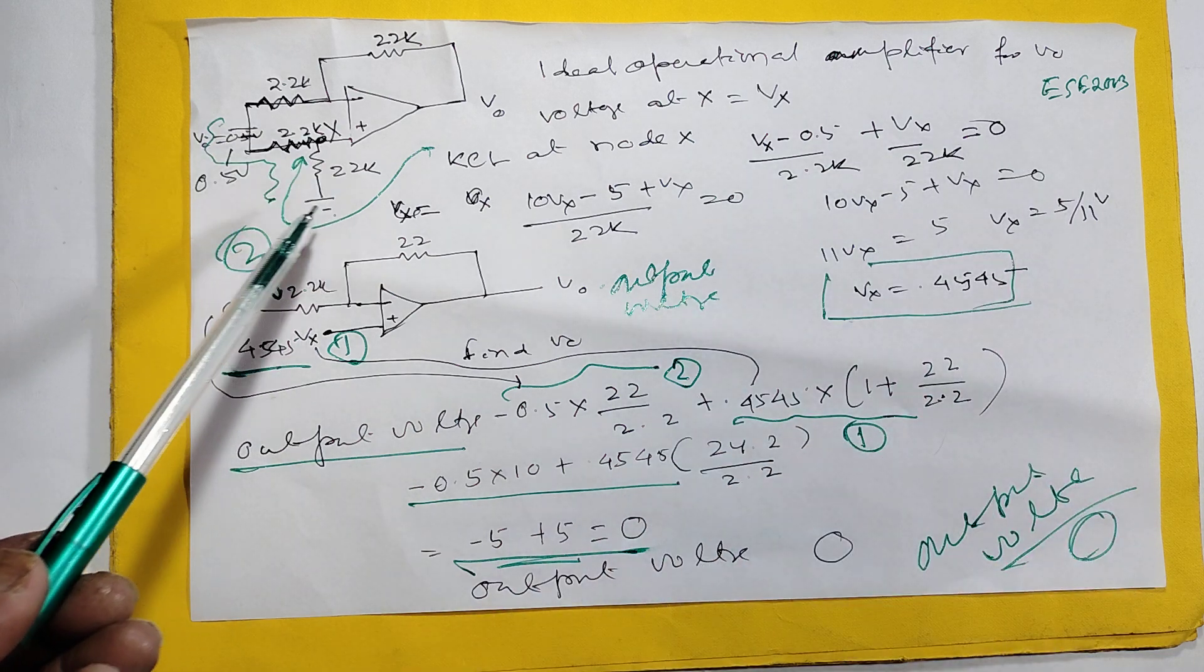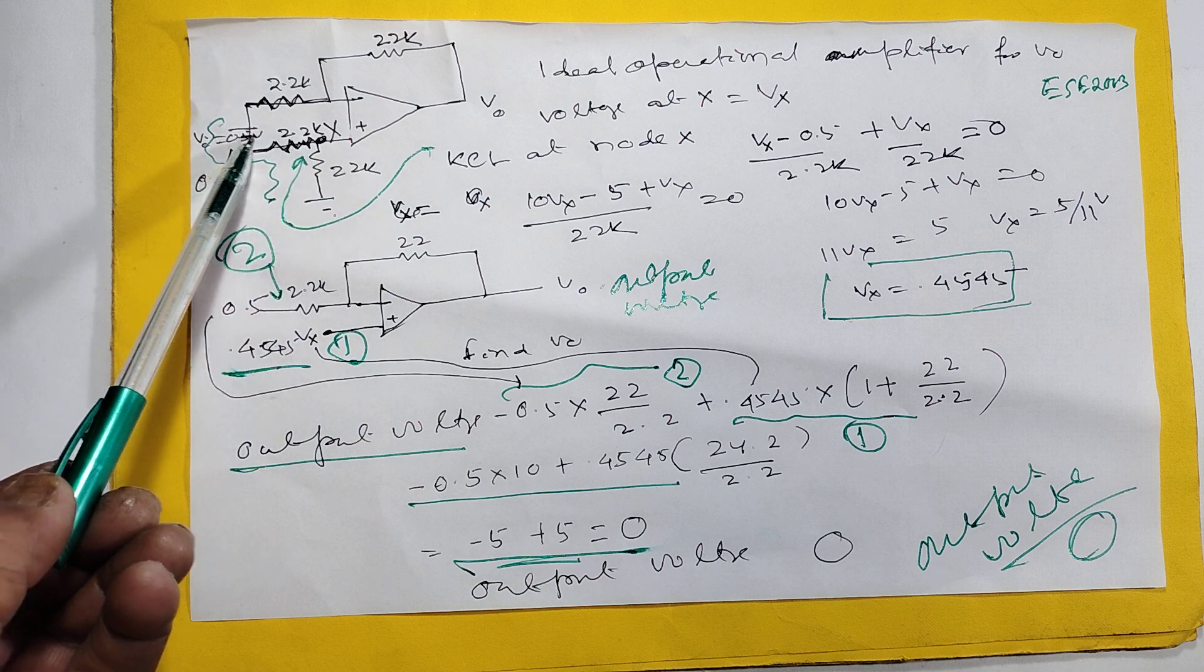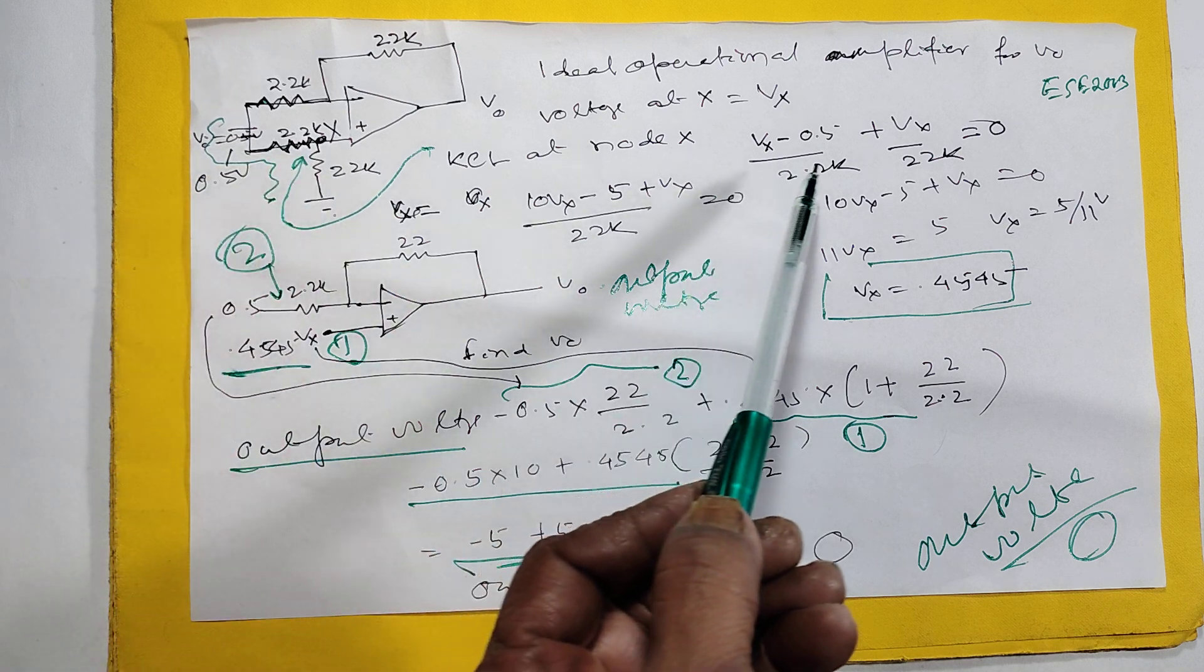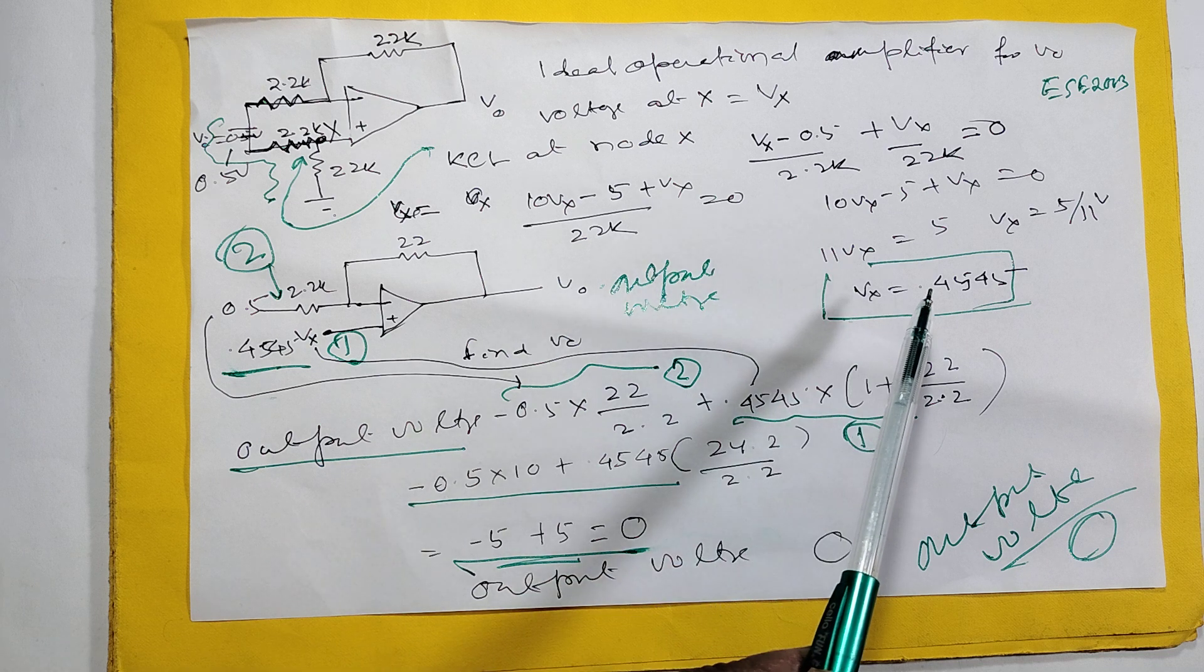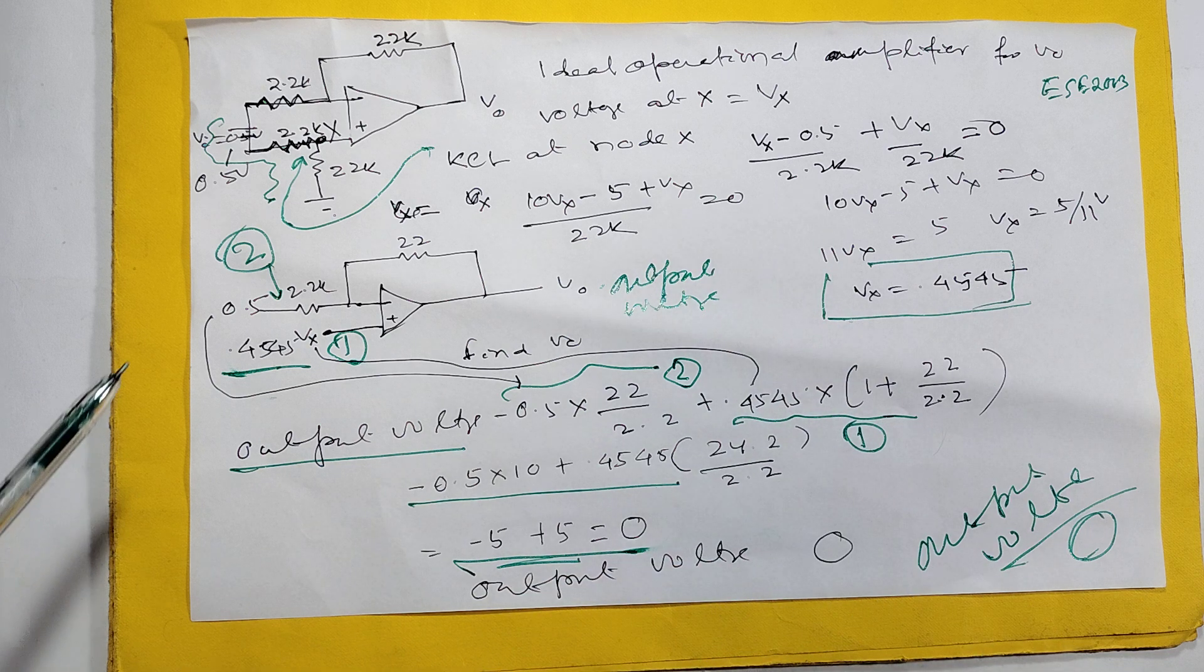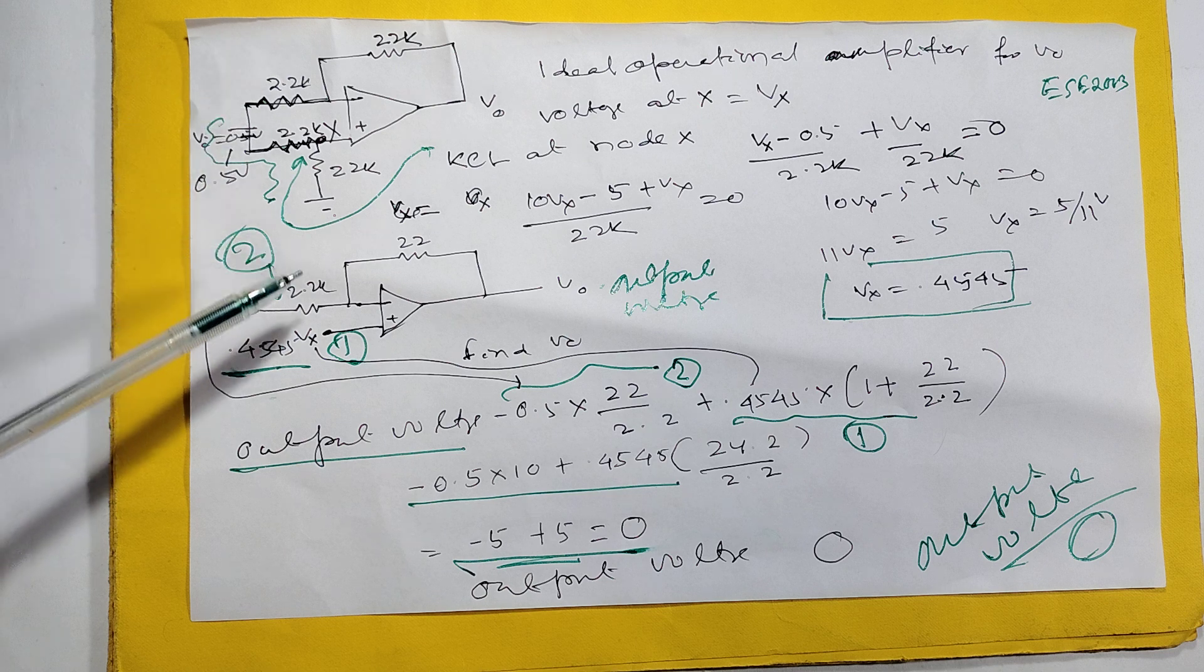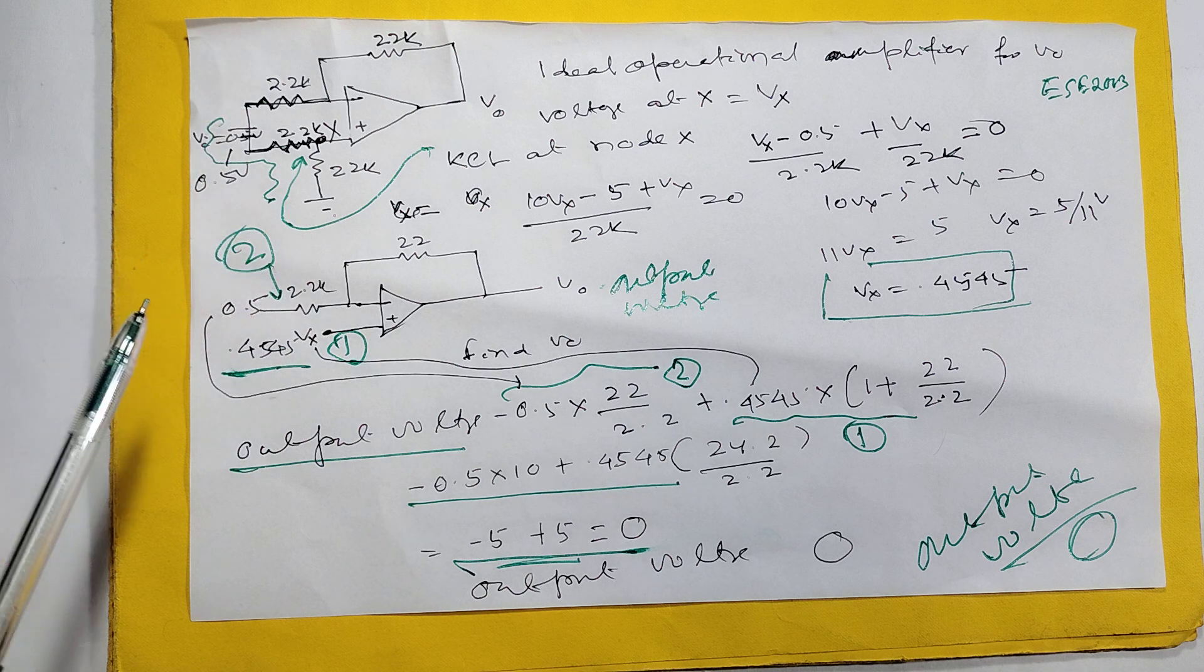Automatically current is only in this location, from here to here. So this is a... Then you calculate, Vx will come 0.4545. Now it is this circuit now changed to this one. Now it is very easy one. Everybody know this one.